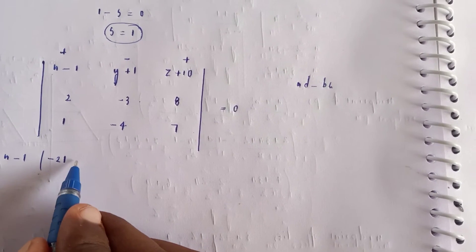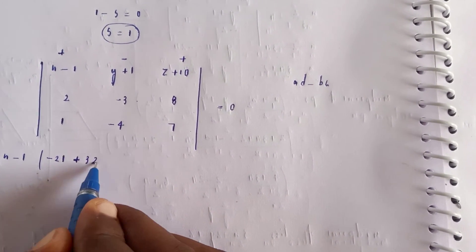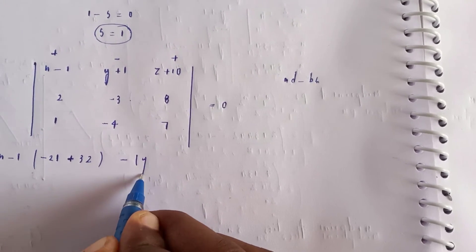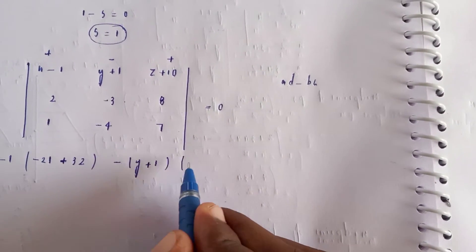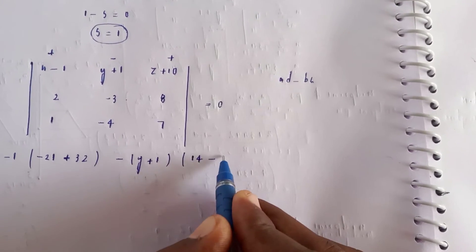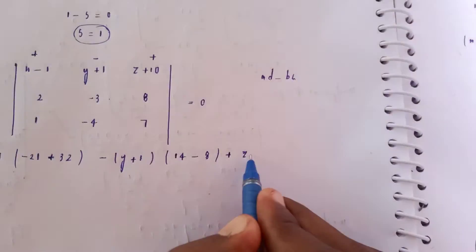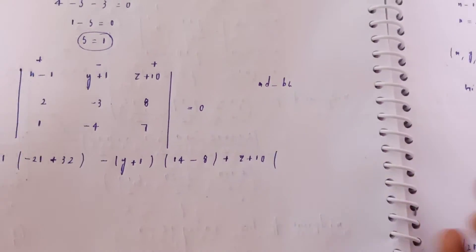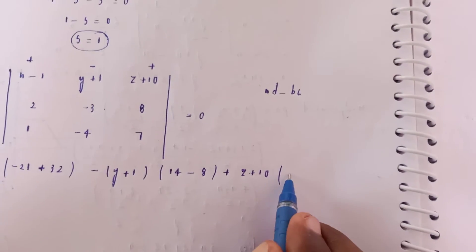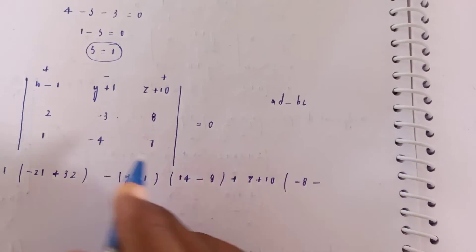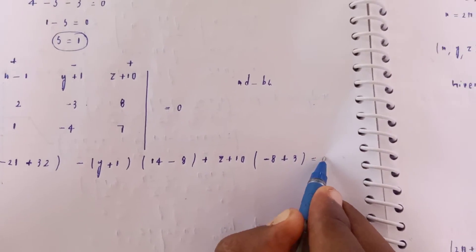Expanding the determinant: first cofactor gives (−3)(7) − (8)(−4) = −21 + 32 = 11. Second cofactor (with sign change): −[(2)(7) − (8)(1)] = −[14 − 8] = −6. Third cofactor: (2)(−4) − (−3)(1) = −8 + 3 = −5. So the plane equation becomes: 11(x−1) − 6 is revised: (x−1)(11) minus (y+1)(6) plus (z+10)(−5) = 0.